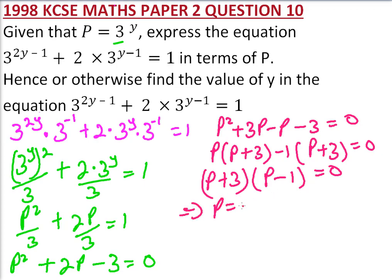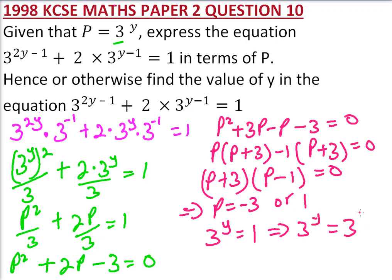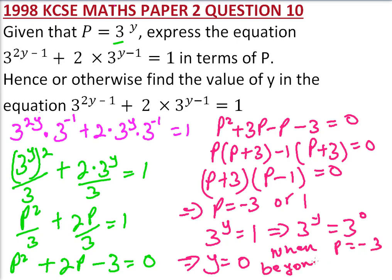This implies P equals minus 3 or P equals 1. If P equals 1, then 3 to the power Y equals 1. Since anything to the power 0 is 1, we write 1 as 3 to the power 0, implying Y equals 0. When P equals minus 3, this is beyond the scope of this syllabus — that is at another level. So we work it out like that and you get yourself 3 marks.